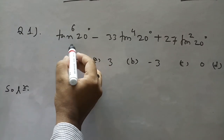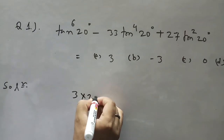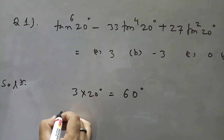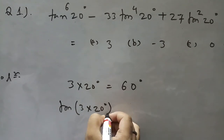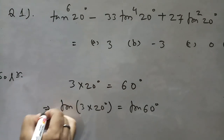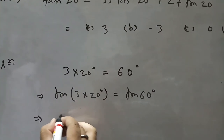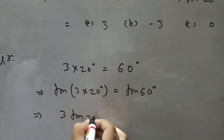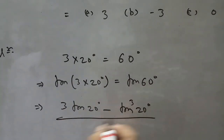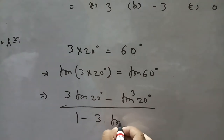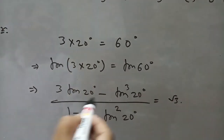Using the angle in this problem: 20 degrees. From the start, 3 times 20 degrees equals 60 degrees. Taking tan of both sides: tan(3 × 20°) = tan(60°). We apply the formula for tan(3θ): tan(3θ) = (3 tan θ − tan³θ) / (1 − 3 tan²θ), where θ = 20°, and this equals √3.